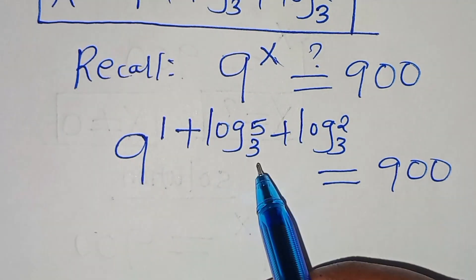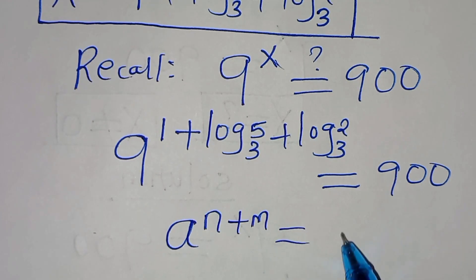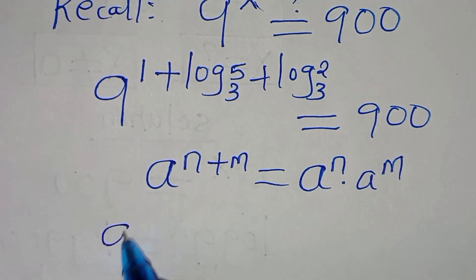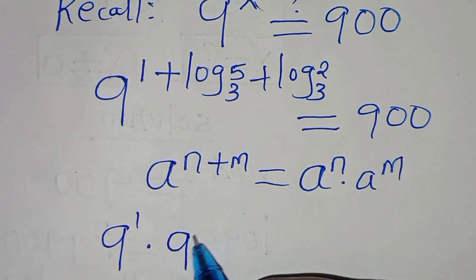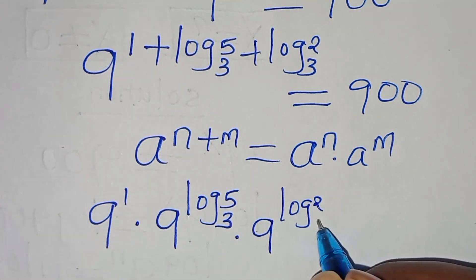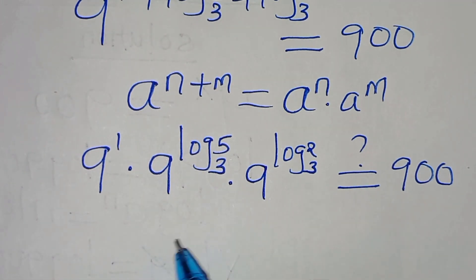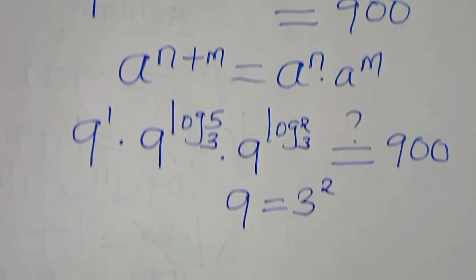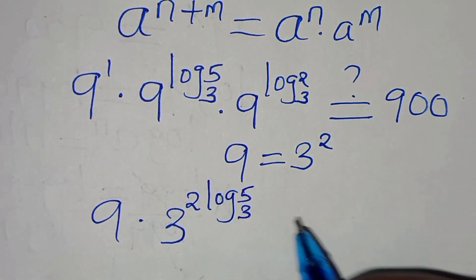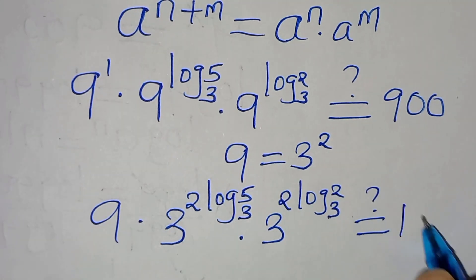We find that 9 to the power of (1 plus log₃5 plus log₃2) is in the form of a to the power of (n plus m), which we can express as a^n times a^m. So here we have 9 to the power of 1, times 9 to the power of log₃5, times 9 to the power of log₃2. This should give us 900. Now we can express 9 as 3², so we have 9, times 3² to the power of log₃5, times 3² to the power of log₃2.